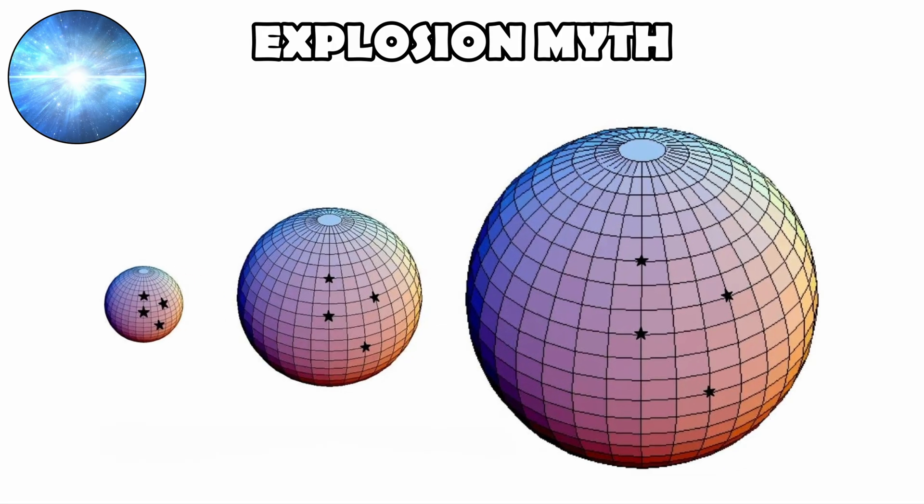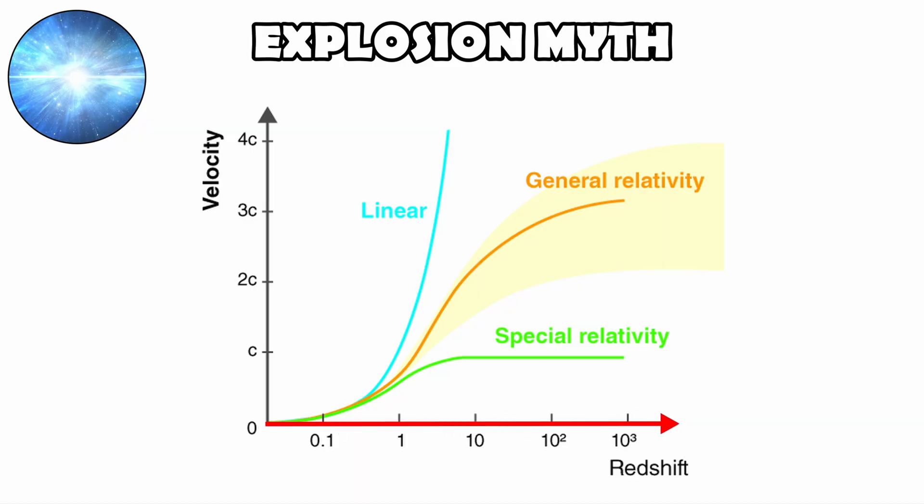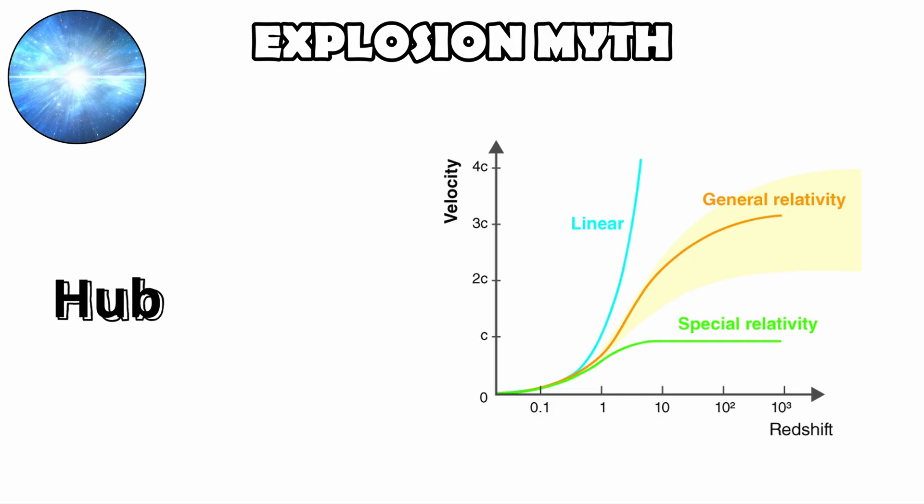Even the way galaxies recede from one another reflects this difference. The farther away a galaxy is, the faster it appears to recede. That pattern, known as Hubble's Law, is exactly what you expect if space itself is stretching.